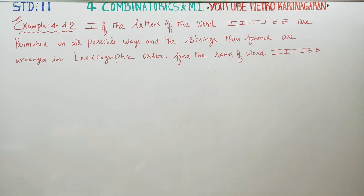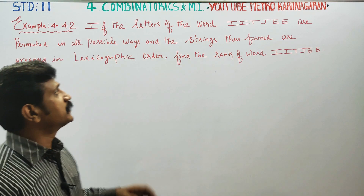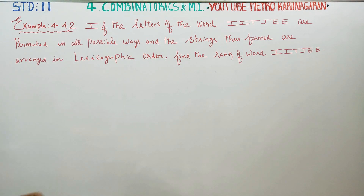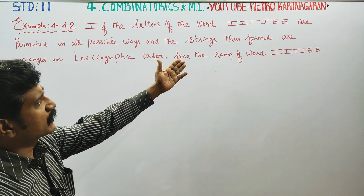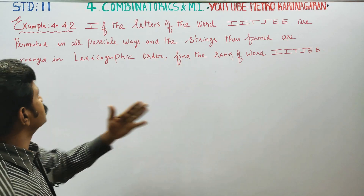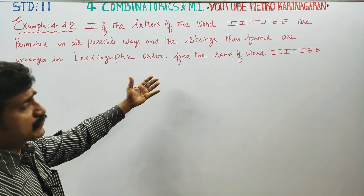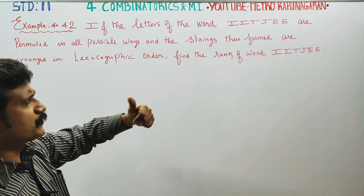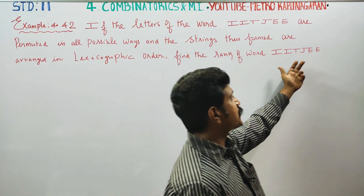Dear Learn Standard Students, I am Etro Karanagaran. In Example 4.42, if the letters of the word IITJEE are permuted in all possible ways, the strings thus formed are arranged in lexicographic order — that is, dictionary order. Find the rank of the word IITJEE.